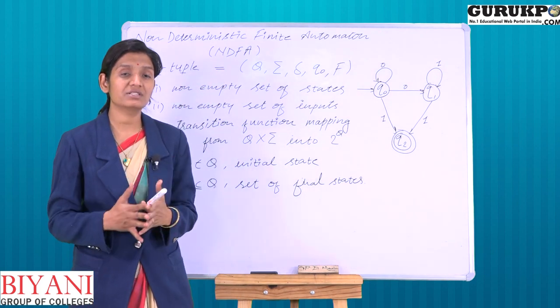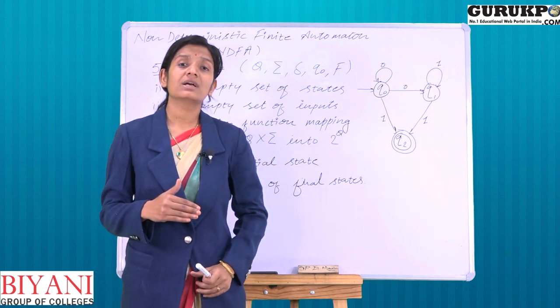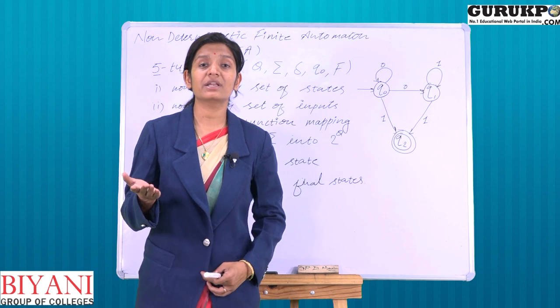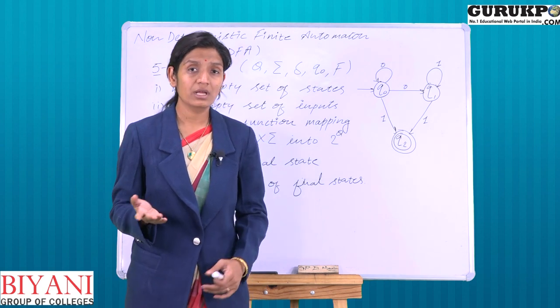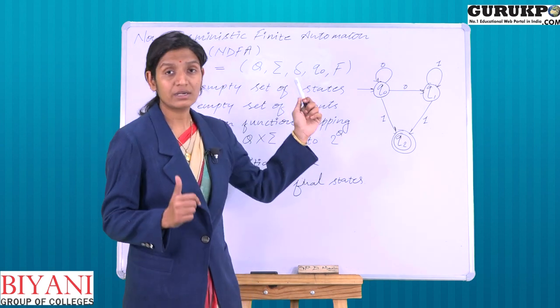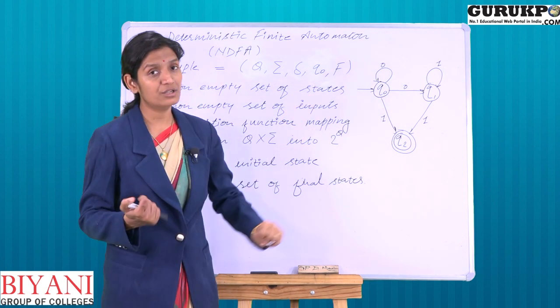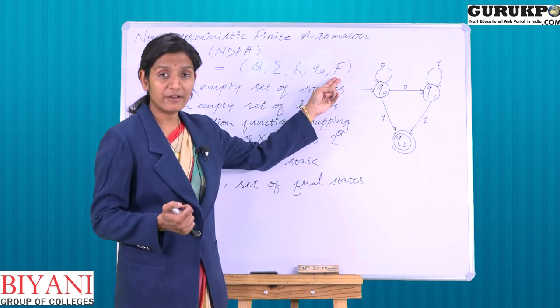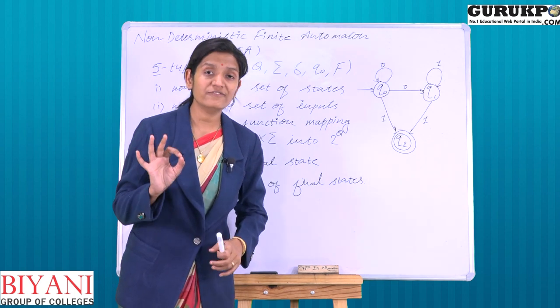That is the present state, current state, in which we put the input and go to the next state. So that will tell you delta. Next is Q0, that is the initial state, and next is F, capital F, set of the final states.